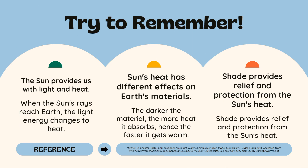Try to remember: the sun provides us with light and heat. When the sun's rays reach earth, the light energy changes to heat. The sun's heat has different effects on earth's materials. The darker the material, the more heat it absorbs, and hence the faster it gets warm. Shade provides relief and protection from the sun's heat.